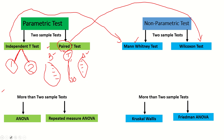When there are more than two samples, we use ANOVA. For example, if we want to compare the revenue or sales of three stores — store one, store two, and store three — we take 30 days of sales data for each store and compare their mean values to check whether they significantly differ. This is called analysis of variance.